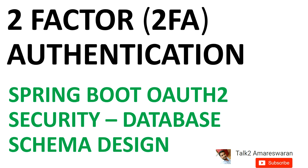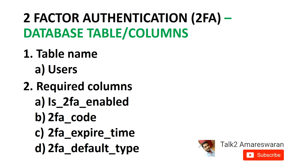What are the required fields important to develop a two-factor authentication system? The required fields are: is_2FA_enabled, 2FA_code, 2FA_expired_time, and 2FA_default_type. Whenever we develop a two-factor authentication system, we need to have these required columns in the database table.